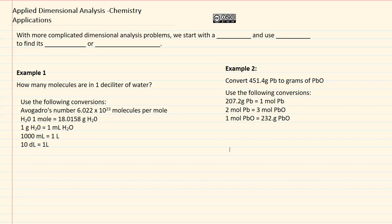Applied Dimensional Analysis Chemistry Applications. With more complicated dimensional analysis problems, we're going to start with a quantity, or in other words a given, and then we're going to use a conversion rate, or rates, to find its result, or in other words, an equivalent.